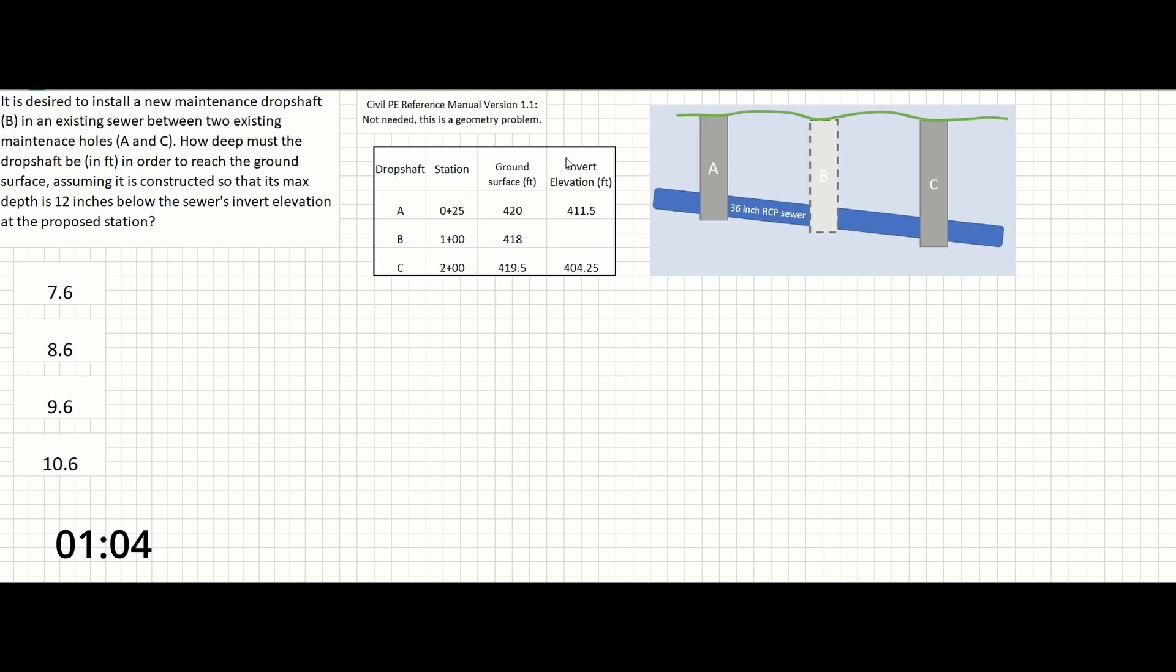It is not giving us the invert elevation for B, and the problem itself is asking us to find the total depth of the drop shaft. Since this is a linear sewer and there's a new drop shaft being put in between drop shafts A and B, we can solve for the slope of the existing sewer. And that's as simple as our rise over our run.